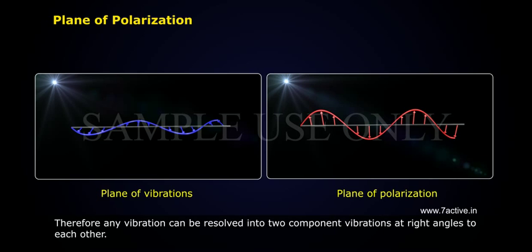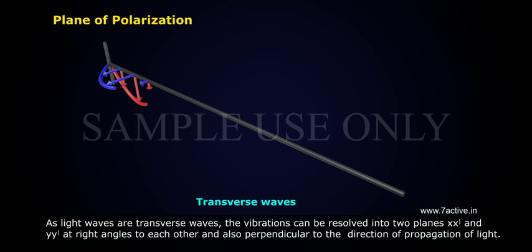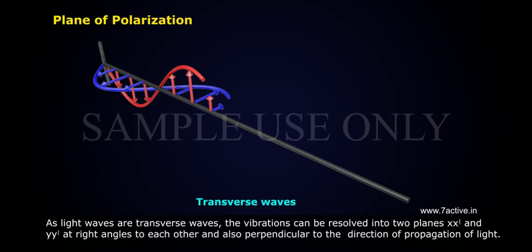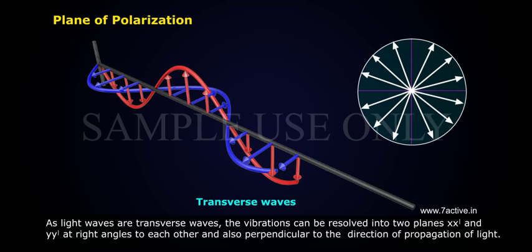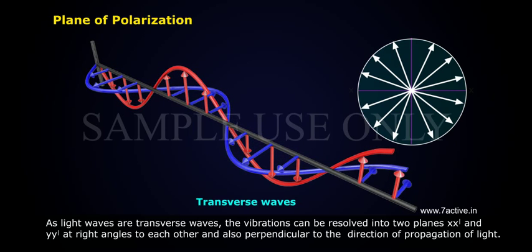Therefore, any vibration can be resolved into two component vibrations at right angles to each other. As light waves are transverse waves, the vibrations can be resolved into two planes, X, X dash and Y, Y dash at right angles to each other and also perpendicular to the direction of propagation of light.